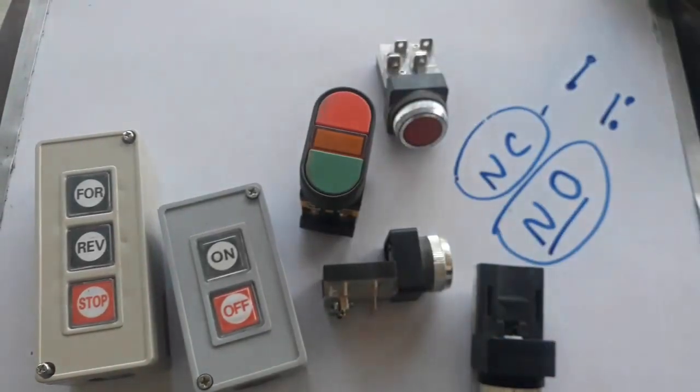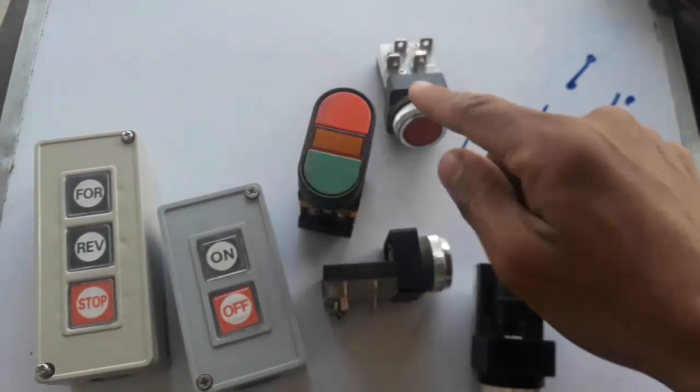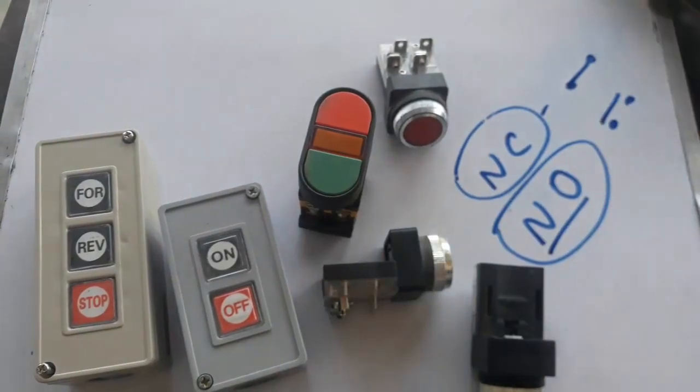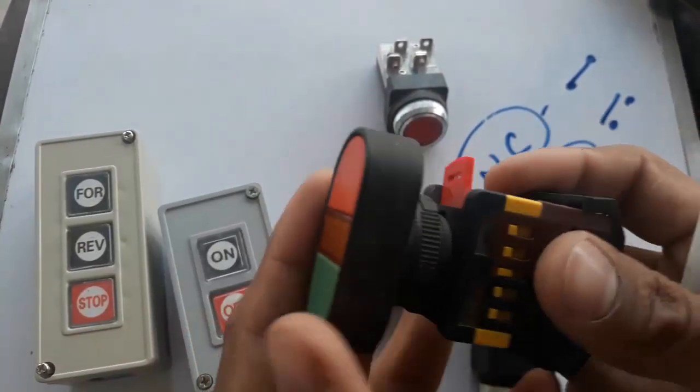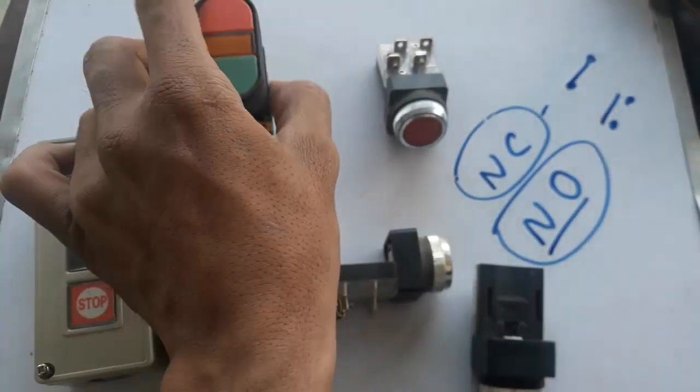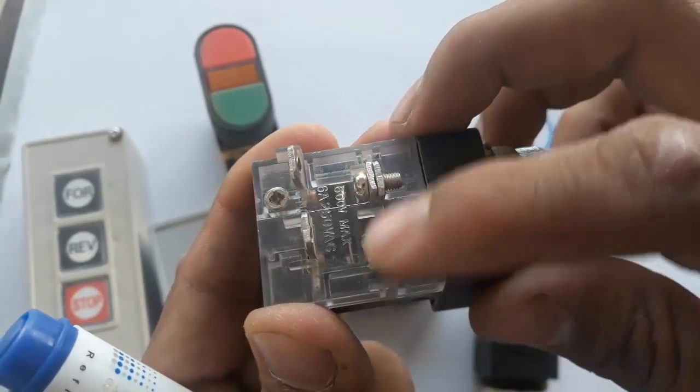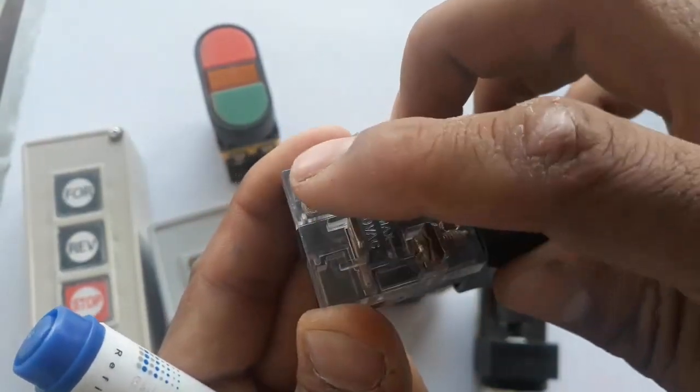So basically I have some switches like this and many others. So what is NC and NO? As I said, NC have normally closed contacts with one another. I have this type of switch which have four terminals. You can see that these are called NC contacts and these are called NO.